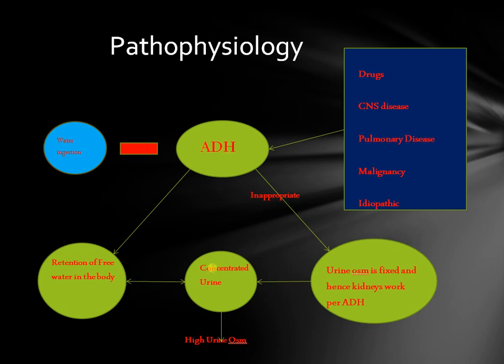When you absorb more free water, the urine becomes concentrated. The stimulus for ADH secretion is hypovolemia or hypotension — for example, in heart failure or dehydrated patients. In those cases, the pituitary is stimulated via osmoreceptors that pick up osmolarity in the serum, then secrete ADH, which tells the kidneys to hold on to water to prevent fluid loss. If you are euvolemic and still secreting ADH, that becomes inappropriate ADH secretion.